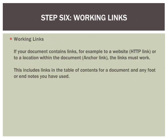The fifth step in creating an accessible Word document is to use alternative text descriptions for any images in your document. This only applies to images that convey information. If an image is purely decorative and doesn't convey any information to the reader, you can skip it. But for all other images, you should provide a text description describing the information that the image conveys to the reader.